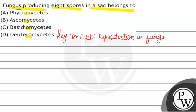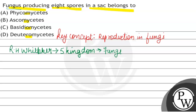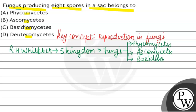Jo question mein mentioned hai — a fungus, what is it? R.H. Whittaker ne five kingdom classification propose kiya jo ab tak hum use karte hain. Us five kingdom classification mein se ek kingdom hai Fungi. Fungi four classes mein divided hai: first Phycomycetes, second Ascomycetes, third Basidiomycetes, and fourth Deuteromycetes, jo ki aapke question mein bhi mentioned hai.